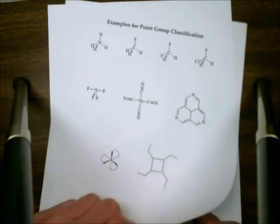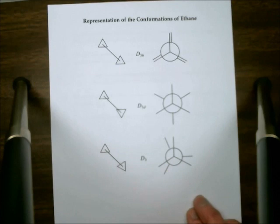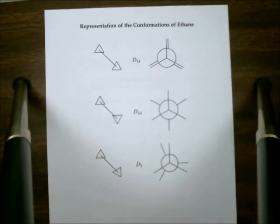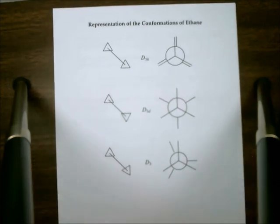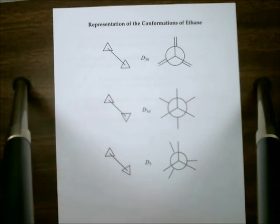Notice that the point group here is D3 — that is not asymmetric. Asymmetric is C1. So it may come as a surprise that chiral molecules can have considerable symmetry. There are patterns worth knowing in the relationships between DnH, DnD, and Dn for molecules constructed from regular geometric figures on opposite sides.